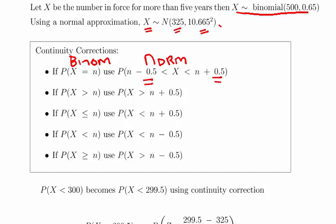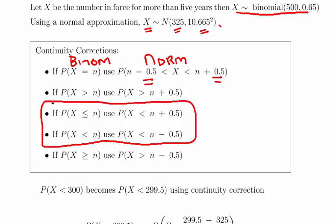I'll focus on these two cases here. This is why reading the question becomes very important. So if X, the number of policies in force for more than five years, is less than or equal to 300, we add an offset of plus 0.5. But that's not what we're asked—we're actually strictly less than. So we use this case here, which is minus 0.5.